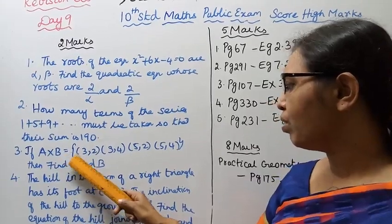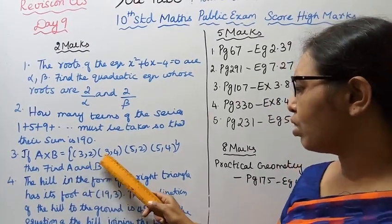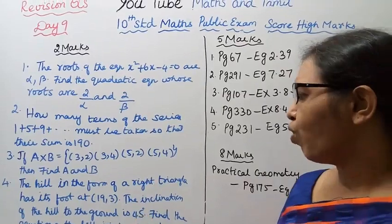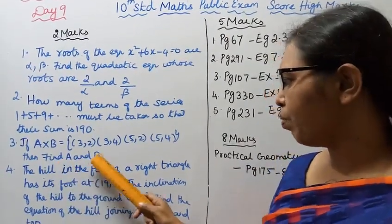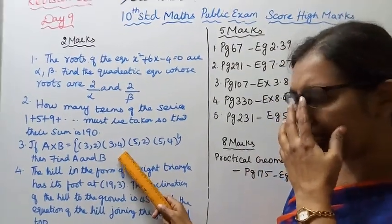Third, if A cross B equals bracket 3, 2, 3, 4, 5, 2, 5, 4, then find A and B. This is 2 marks, I expect.